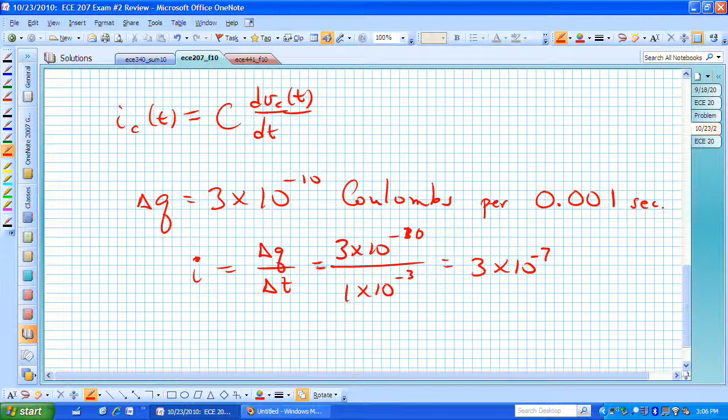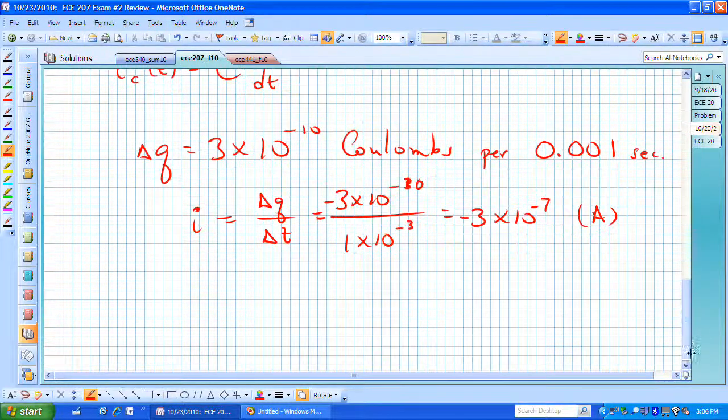And we're actually losing charge, we're not gaining charge so we're really looking at minus 3 times 10 to the minus 7 coulombs per second or amperes. That's our current.